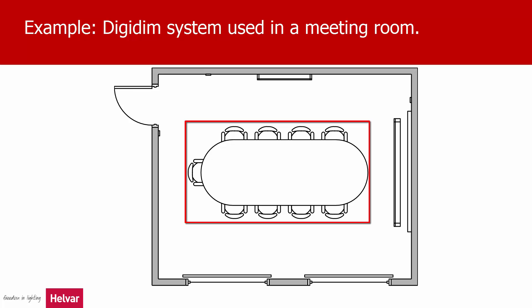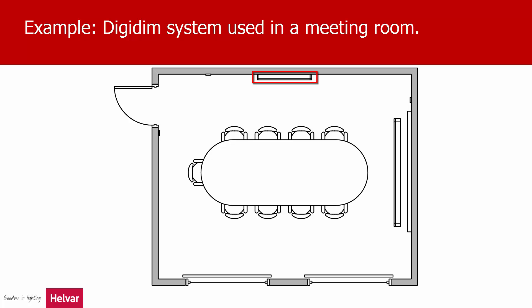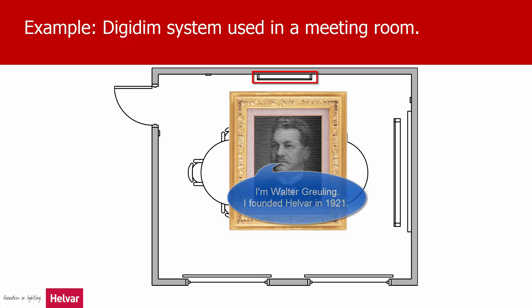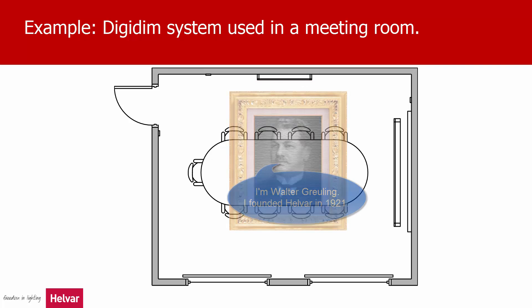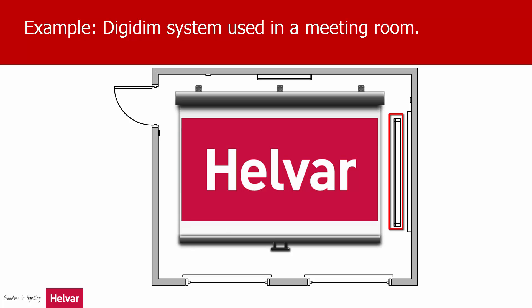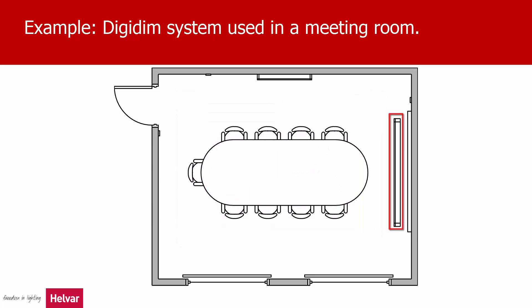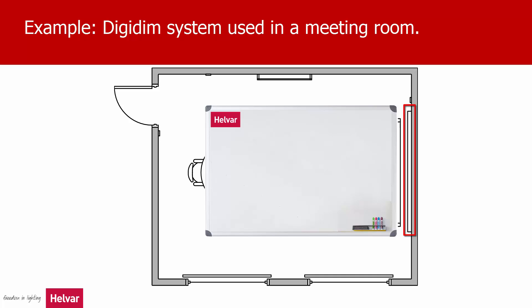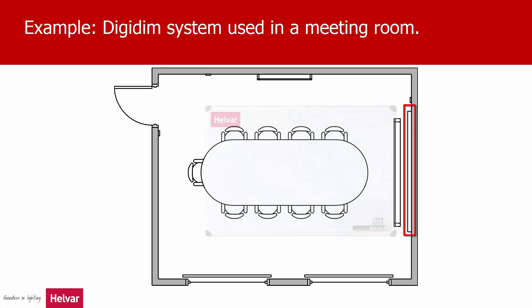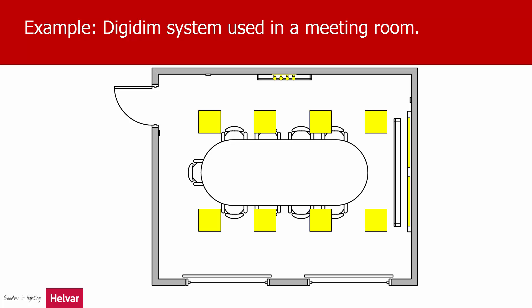There's the meeting room table, a piece of artwork — perhaps a picture of the founder of the company. There's a projector screen that comes down from the ceiling. On the wall at the back is a whiteboard. The Digidim system can also be used to control motorised blinds, but we'll focus on the electric lighting for now.